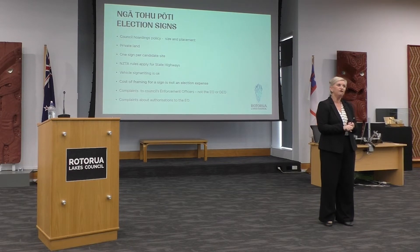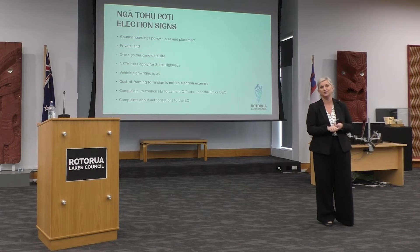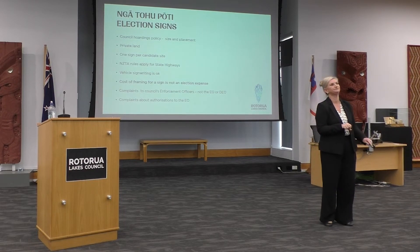Your sign itself is an election expense and you will have to disclose that, but you don't have to disclose the cost of the framing — the wood holding up your sign is not an election expense. If you or anyone in the community has a complaint about signs, it needs to come through to council's enforcement officer. For complaints around authorisation specifically, those need to go directly through to the electoral officer.